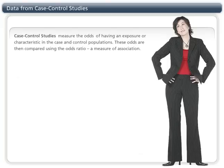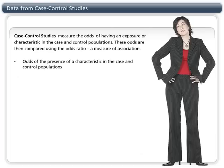Case-control studies measure the odds of having an exposure or characteristic in the case and control populations. These odds are then compared using the odds ratio, a measure of association.